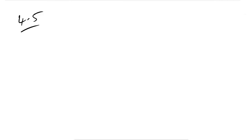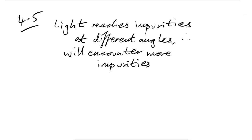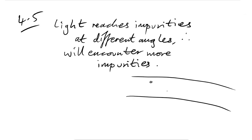When the fibre is used to monitor earthquakes, impurities move and reflect light back. The question asks why the amount of reflected light changes as the fibre bends. Light reaches impurities at different angles and will encounter more impurities. The mark scheme says it may encounter different sizes of impurities — basically the more it bends, the more difference there is between all the light rays bouncing around.